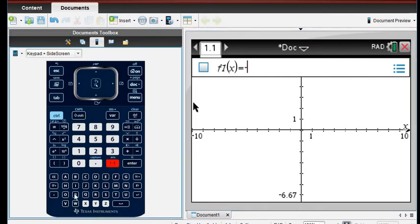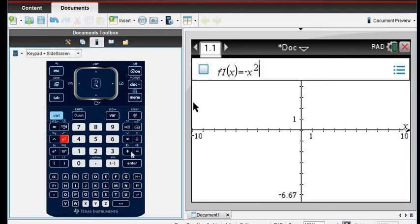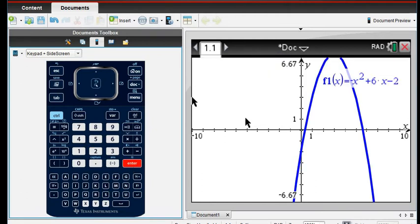And then all we have to do is type in our value. So I have negative x squared plus 6x minus 2. Okay, so we go ahead and we type it in here, and then all you have to do is hit enter, and it will graph it for you.